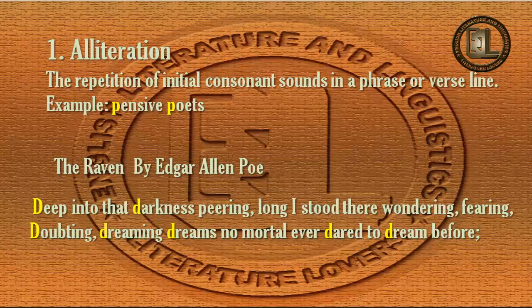The poetic example is these two lines from a poem written by Edgar Allan Poe. The alliteration in these lines is the sound 'B,' which is highlighted here. It is a good example of alliteration in poetry.